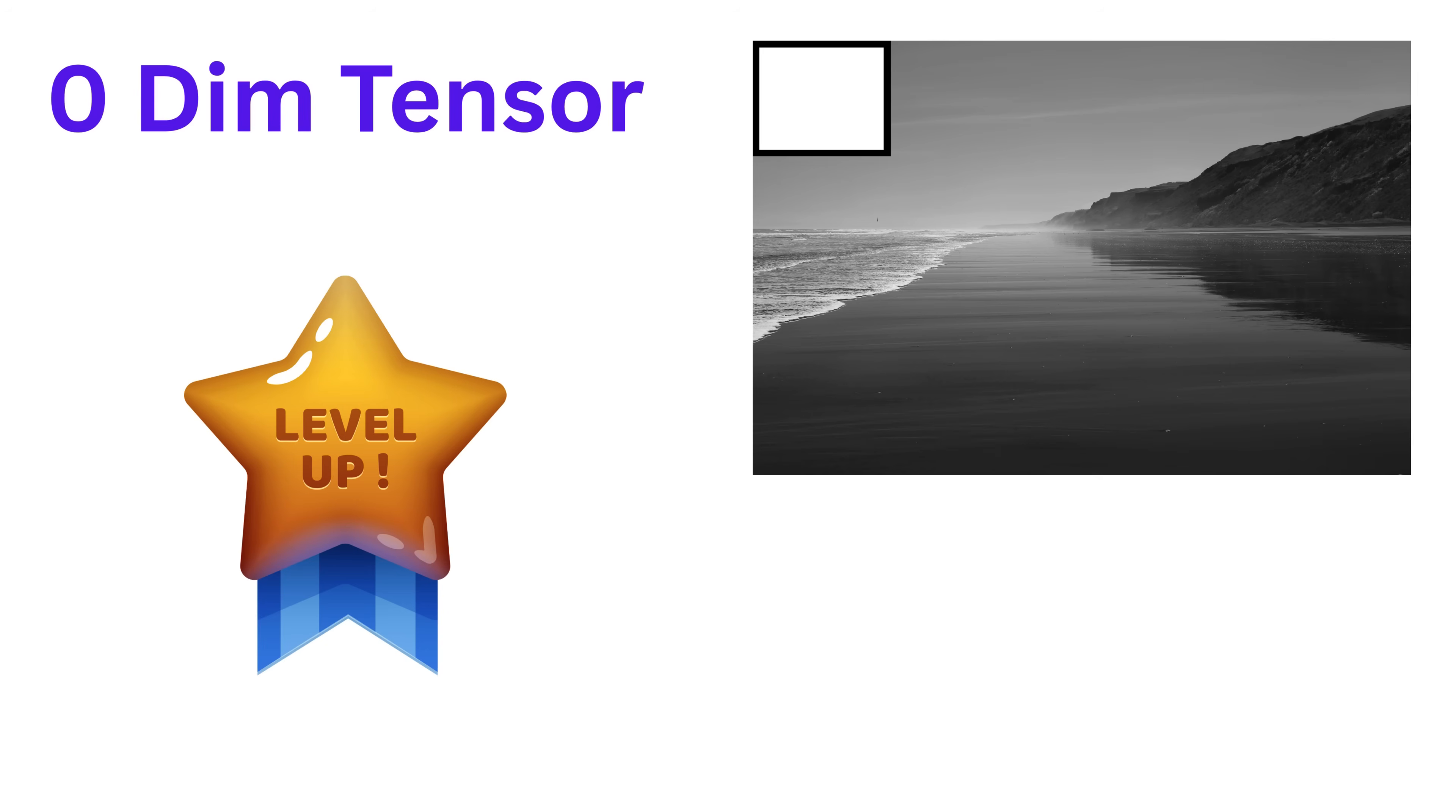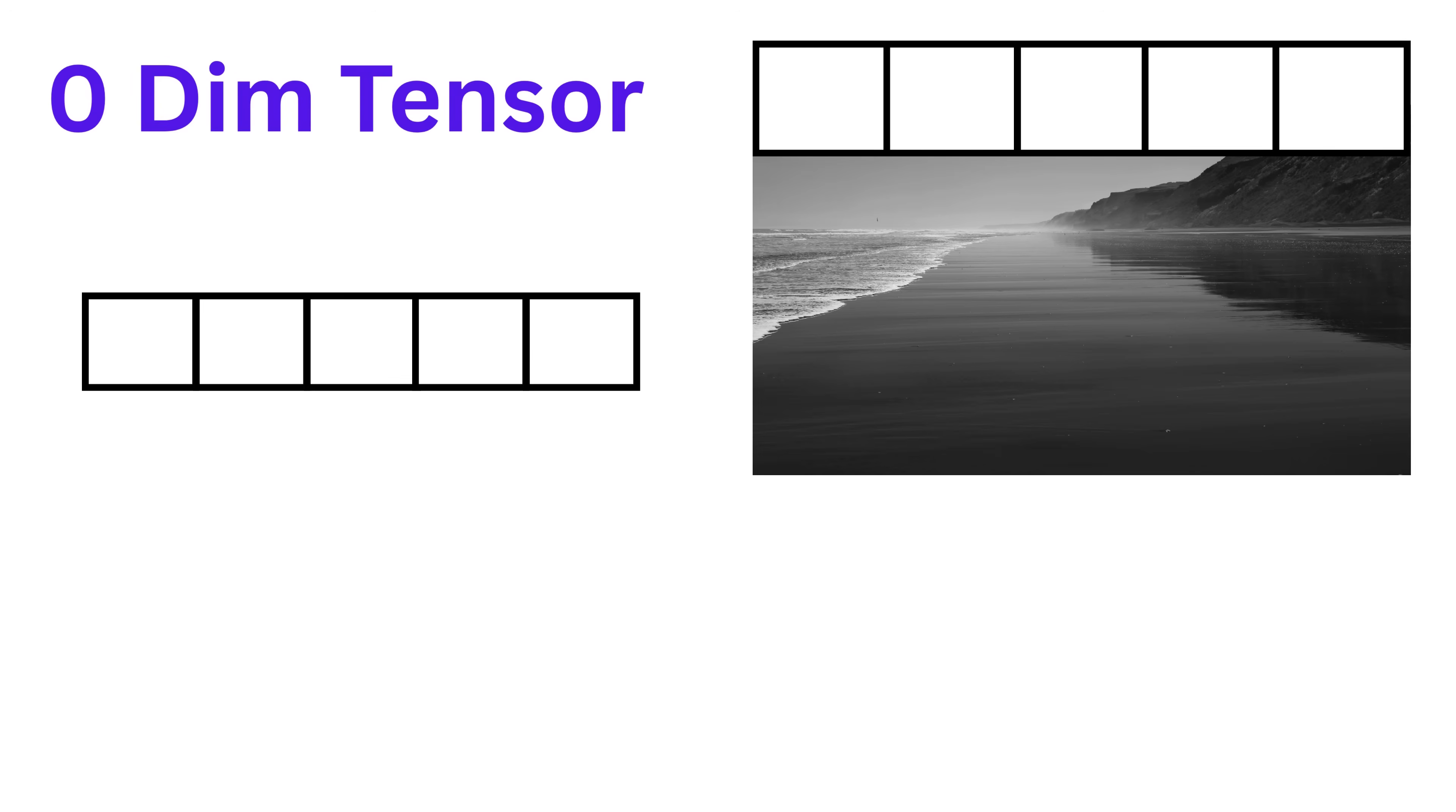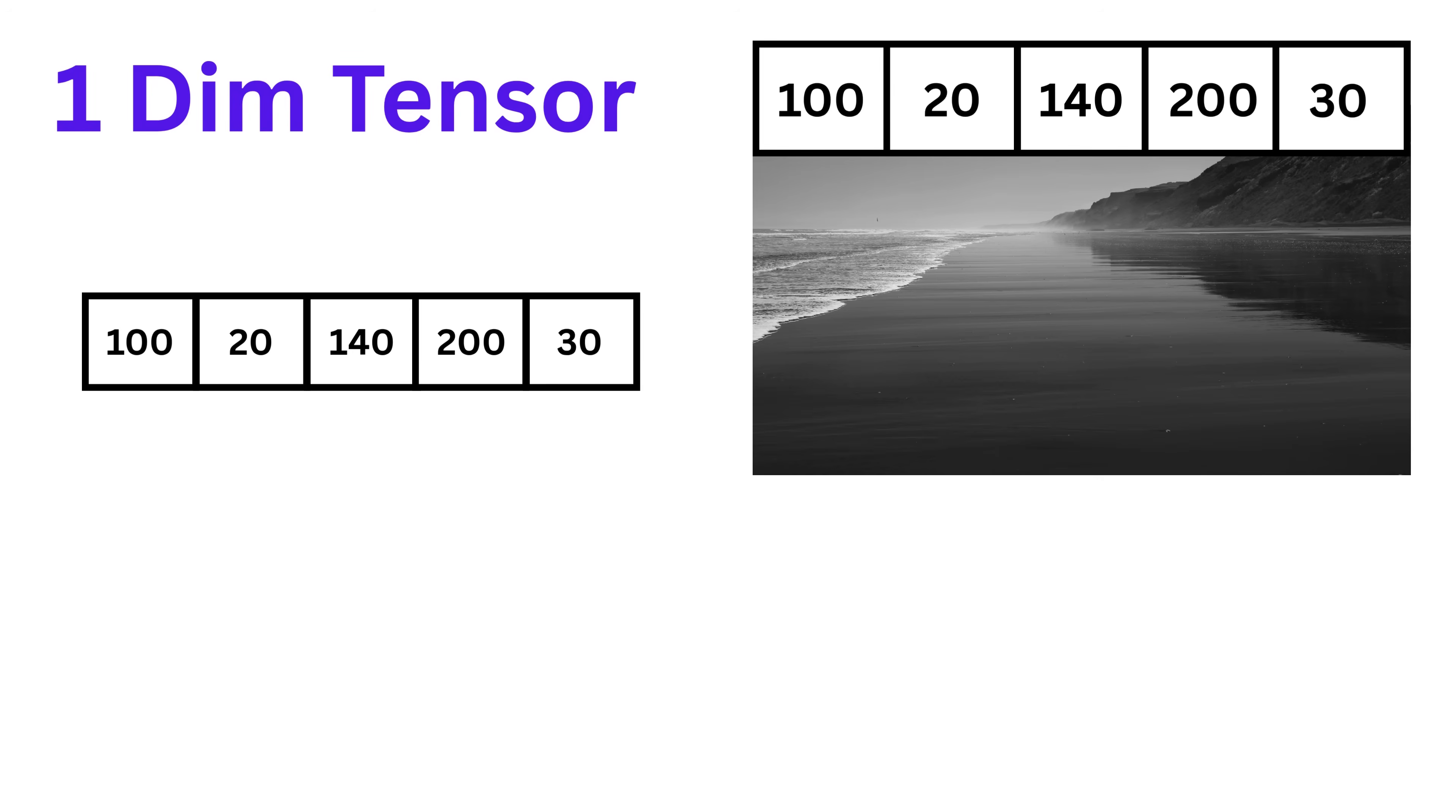Now, let's go one step ahead. What if you had a row of pixels, like a horizontal line of pixels, maybe taken from the top row of a photo? Every pixel in that row has some brightness value. You can think of this as a one-dimensional tensor, or 1D. For example, five grayscale pixels in a row could have brightness values like 100, 20, 140, 200, and 30. So now you have five numbers lined up one after the other. This is a list of numbers. It has length or size, but no height and no width. Just like a straight line.